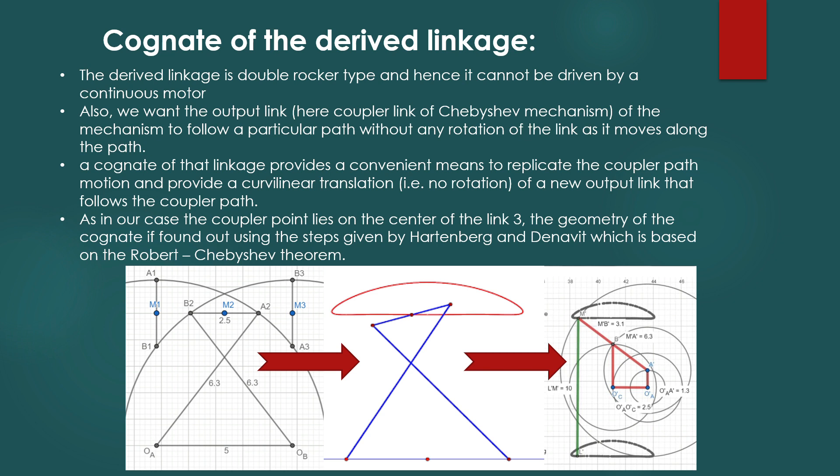Cognate of the derived linkage. Thus, we now have a mechanism which traces a curve that can be used for walking mechanism. But as you can see the derived linkage is double rocker type and hence it cannot be driven by a continuous motor.